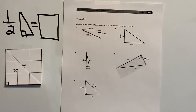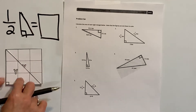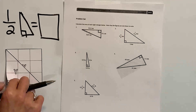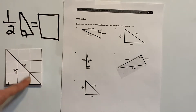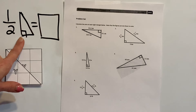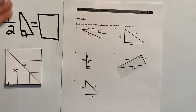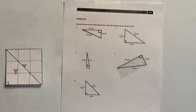Yesterday we started talking about the area of a right triangle. From our investigation, we took a square and placed a right triangle on it and determined that it takes two right triangles to make the square, so the right triangle is exactly half of the square.